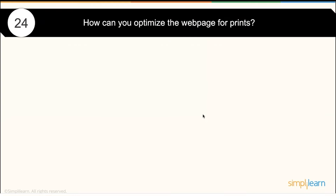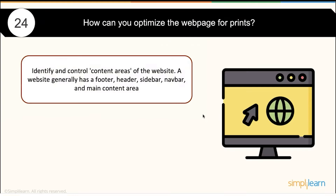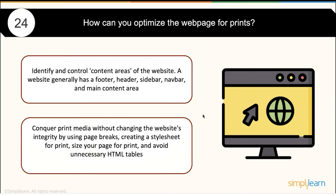How can you optimize a web page for print? First, identify the content areas of a website — a general website has a footer, header, sidebar, navbar, and content area. You can handle printing without changing the website's integrity by using page breaks. Create styles for print size, and avoid unnecessary HTML tables. Using this approach, you can optimize the print output of your web pages.